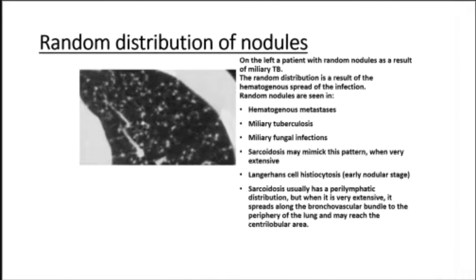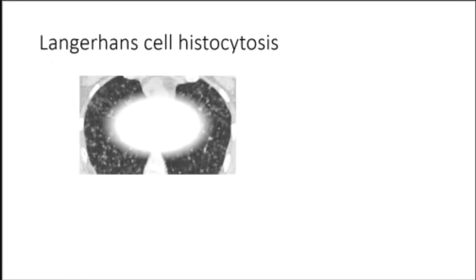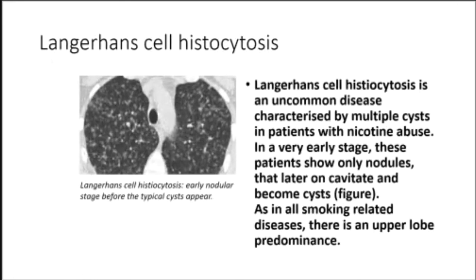Random distribution of nodules results from hematogenous spread, as seen in miliary TB. Random nodules are seen in hematogenous metastases, miliary tuberculosis, miliary fungal infections, and Langerhans cell histiocytosis. Sarcoidosis may mimic this pattern when very extensive, as it can spread from a perilymphatic distribution along the bronchovascular bundle to the centrilobular area.